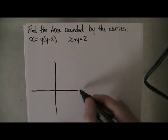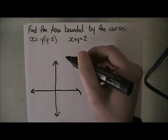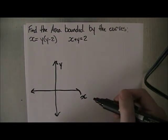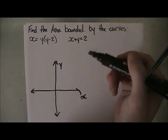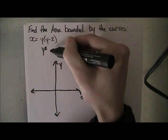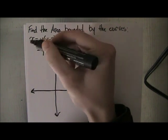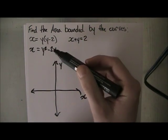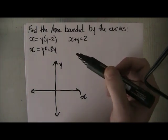Here's my Cartesian plane. It doesn't have to be pretty or anything. This is the y-axis, x-axis. So we have x equals y times (y minus 2). We can develop that a bit: we get y squared minus 2y is equal to x. We know that y squared is a parabola, so it's going to look like a parabola, but we're not sure where the points are.